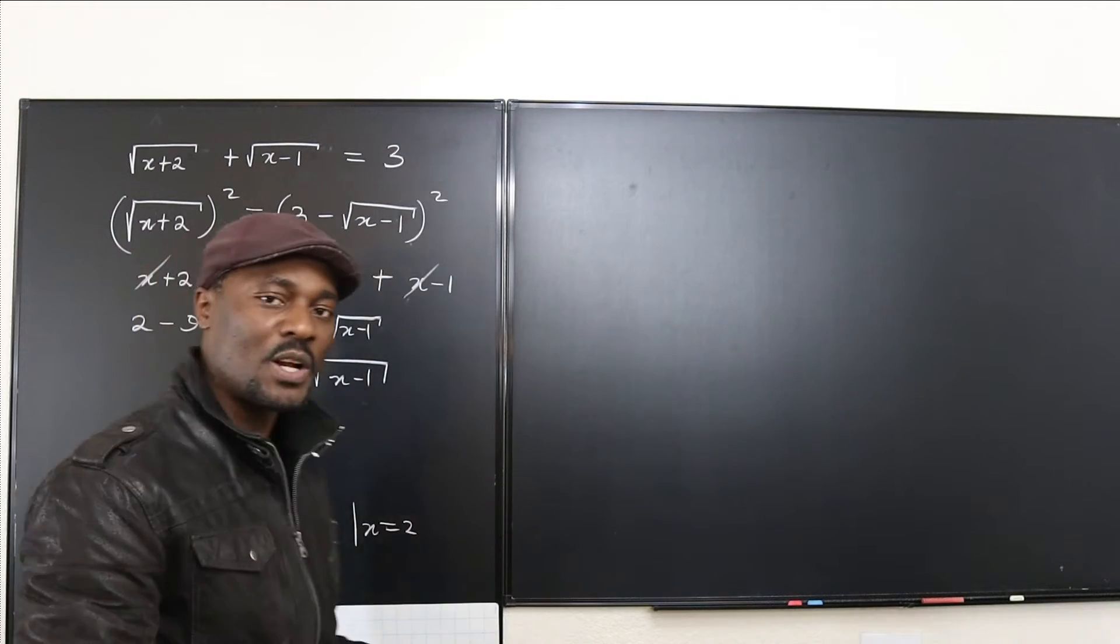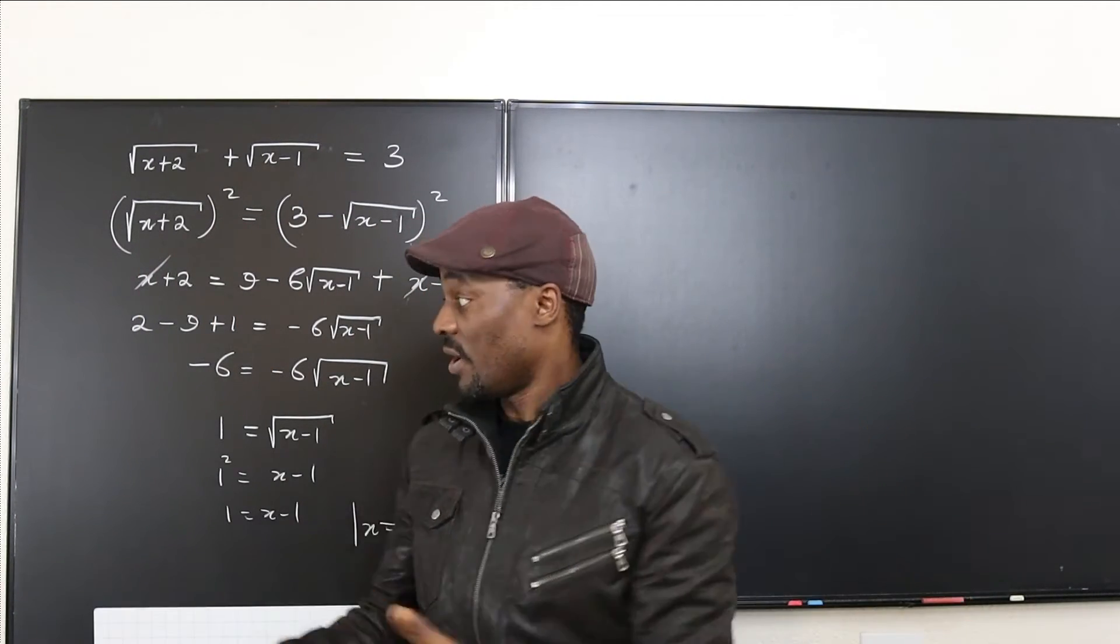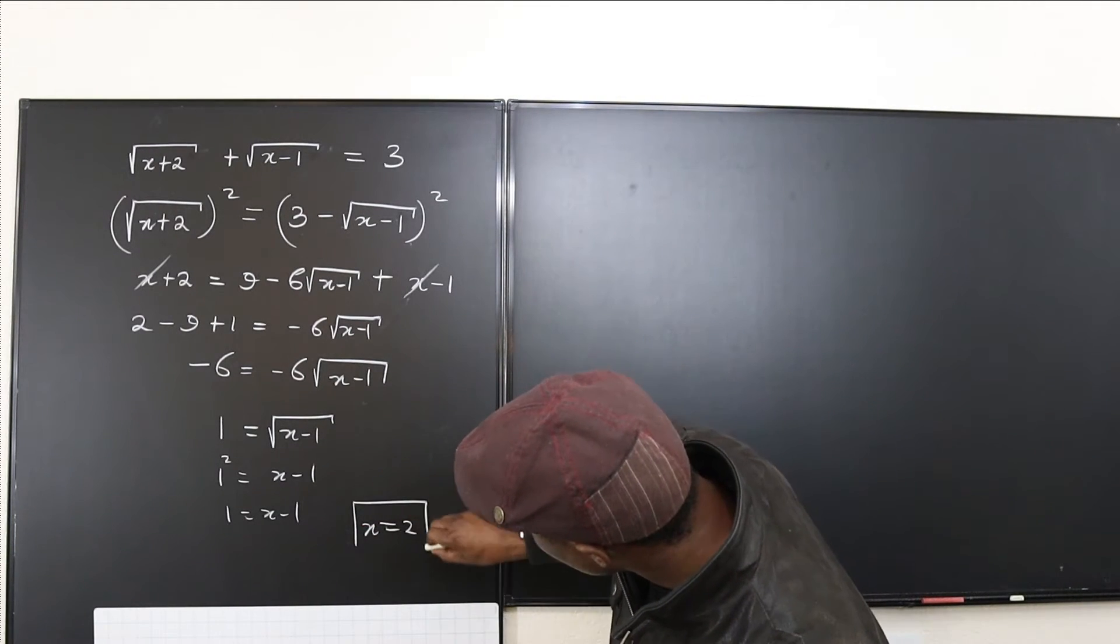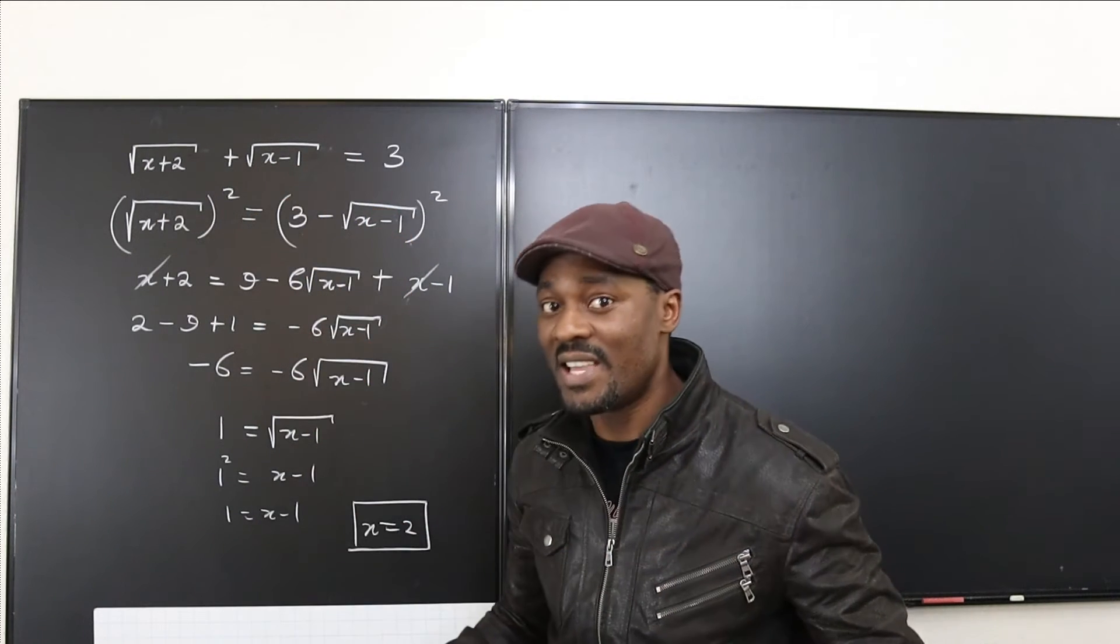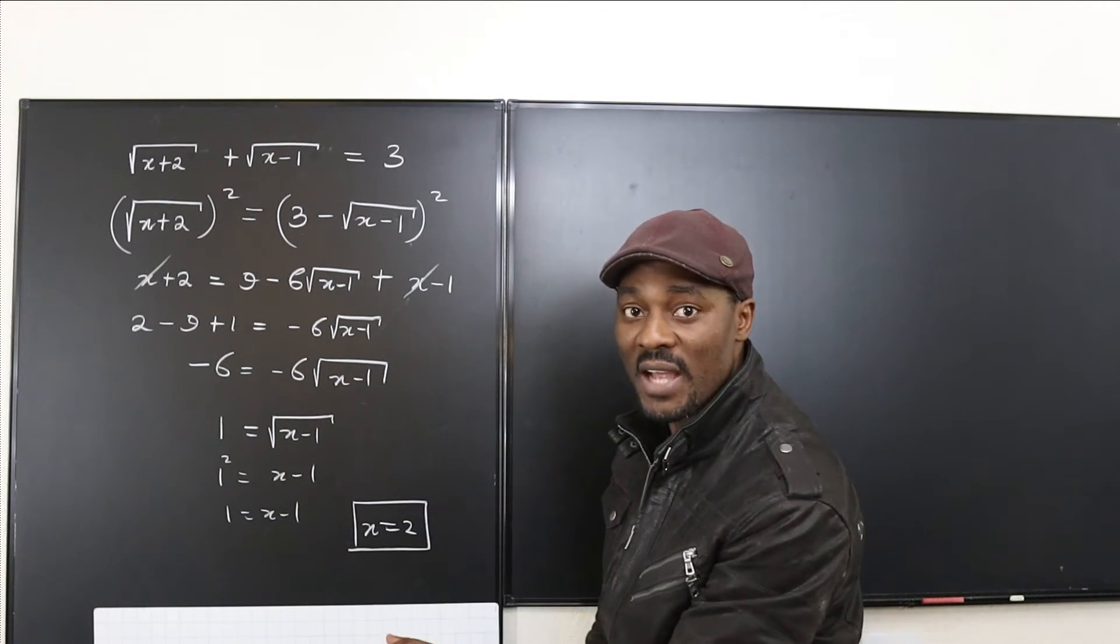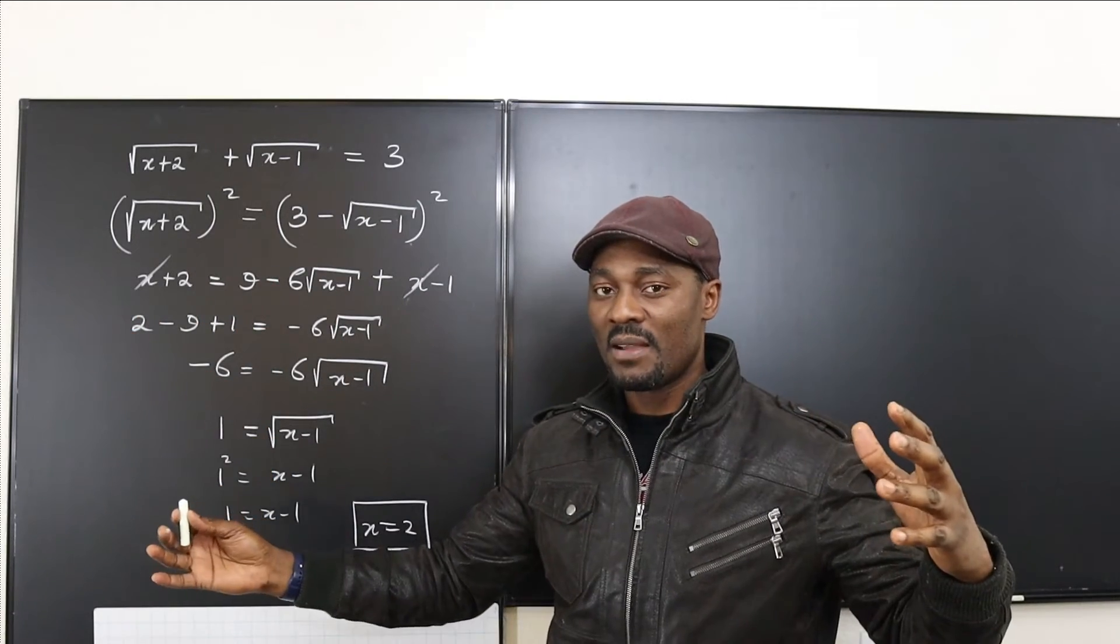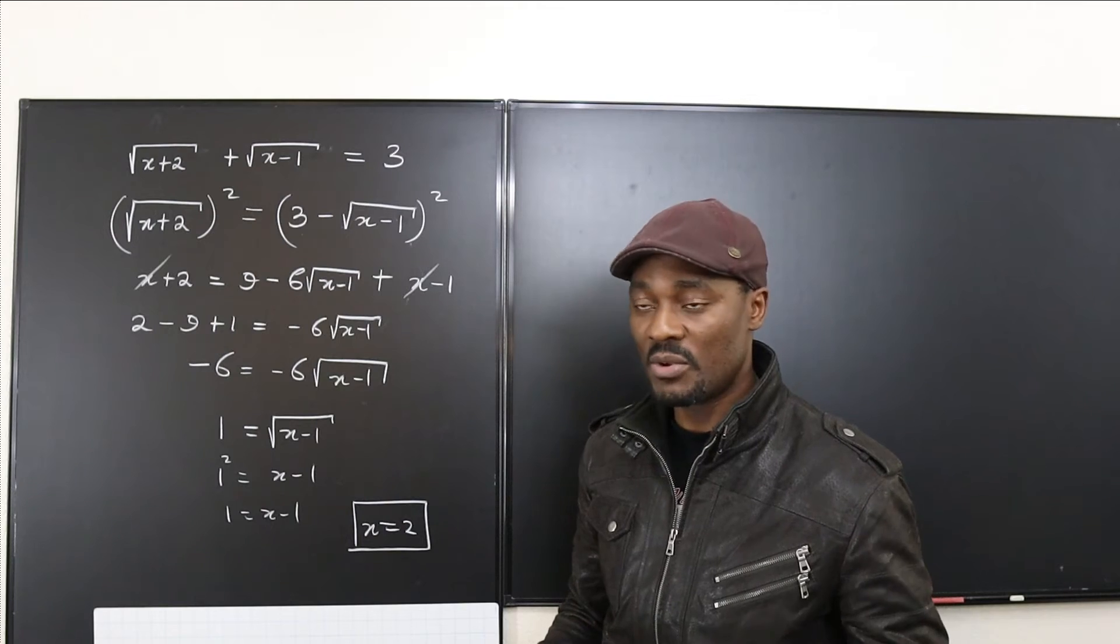Now, before you box it, you want to go back and say, is this answer correct? I mean, your calculation is right. But if I plug in 2 into this and this, will it give me 3? Because the crazy thing about radical equations is that sometimes the number you get as your answer does not satisfy the equation. And that happens when you square both sides. You're going to see some crazy ones in other examples in the other videos that I'm going to do.